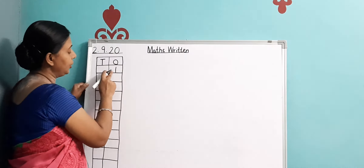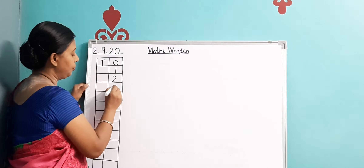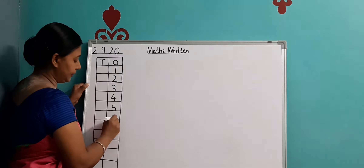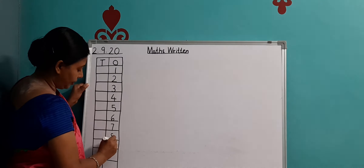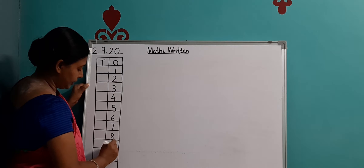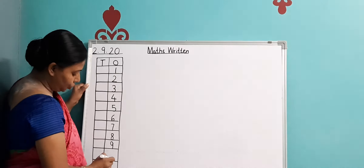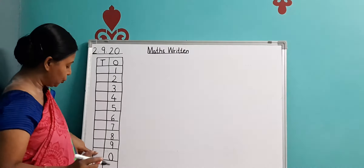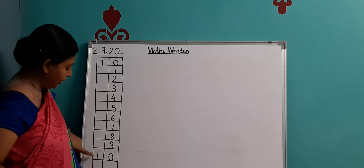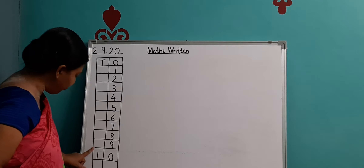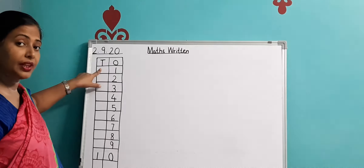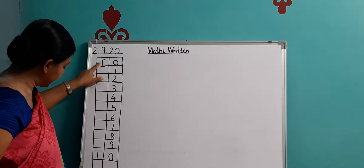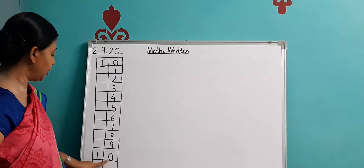Under O, you will write 1, then 2, then 3, then 4, then 5, 6, 7, 8, 9 — and as I have told you, 0 will come after 9 over here once again, and 0 has no value — nothing. So we place 1 over here. It has become 1, 0 — ten. We write 1 in which column? The 10's column. T for 10's. In this column we always write 1, 0 — ten.